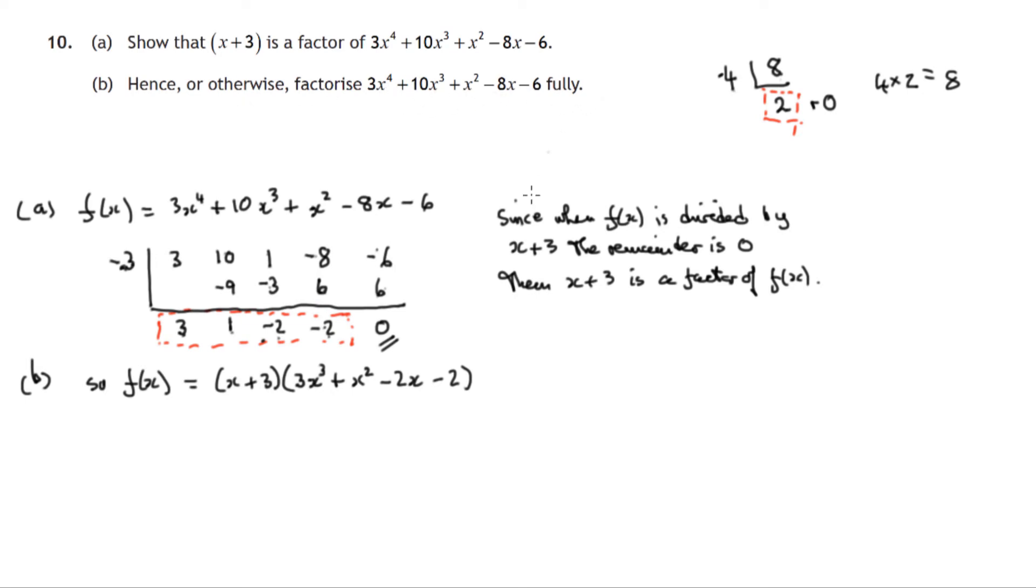Hence or otherwise factorize this fully. So we have to continue and test whether this cubic expression has factors. Now we're on our own here. In the first part we were led to a factor and we were led to using negative 3 because we were told x plus 3 is a factor. We're not told any factors for this cubic expression. So it's like hunting for gold. We might be lucky, we might not. We would try x plus 1, x minus 1, x plus 2. So we'll try a negative 1, a 1, a negative 2, a 2. Let's try systematically. We'd probably try 1 then negative 1, 2 then negative 2 and so on.